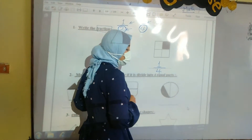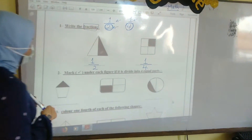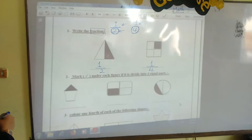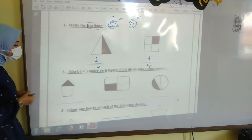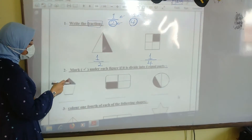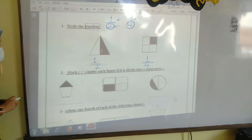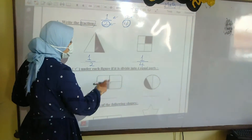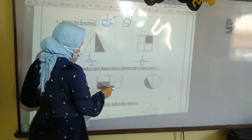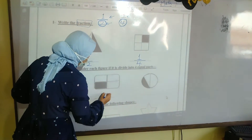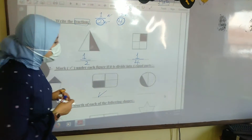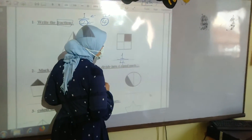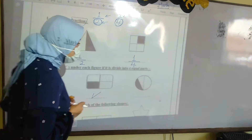Number 2, mark right under each figure if it is divided into 4 equal parts. The first shape here is divided into 2 parts, so don't mark it. Here we have a rectangle, it's divided into 4 equal parts — yes, so I will mark it. Here we have a circle. Is it divided into 4 equal parts? No, so we don't mark it.